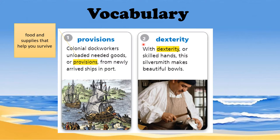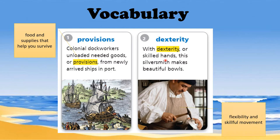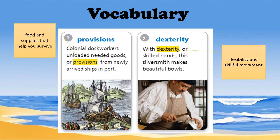Number two is dexterity. With dexterity, or skilled hands, the silversmith makes beautiful bowls. Dexterity means skilled hands, or in other words, flexibility and skillful movement — something certain people, such as those making arts and crafts, would possess.